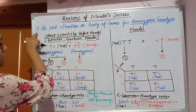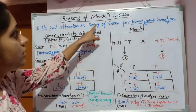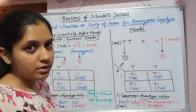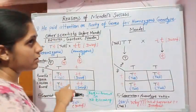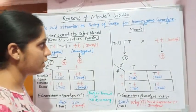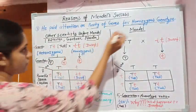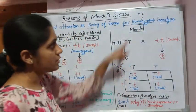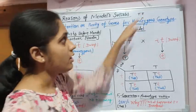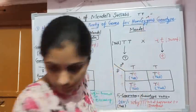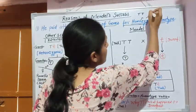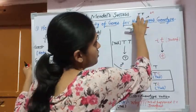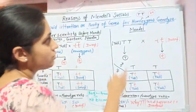The first reason is that Mendel paid attention to the purity of genes — the homozygous gene form. Mendel took parents that were homozygous. He did not take parents that were heterozygous. Homozygous means when the two alleles in one parent are the same — for example, both representing tallness, or both representing dwarfness. So in this genotype both alleles are the same type. These are called homozygous.